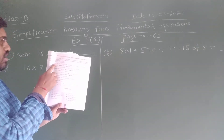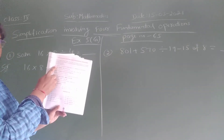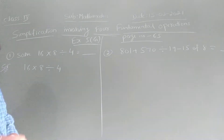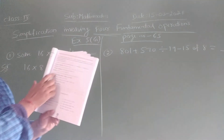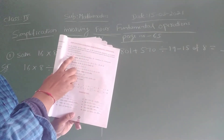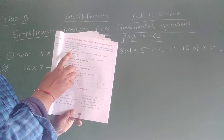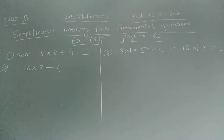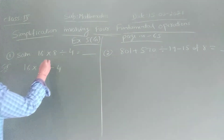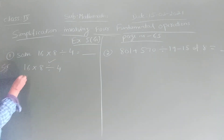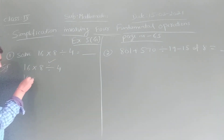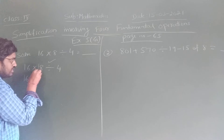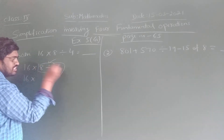According to the order O, D, M, A, S — O is not there, so we leave it. After O, what is there? D is there. D means division. Is there division? Yes, division is there. So keep 16 as it is and perform 8 divided by 4. We have to divide 8 by 4.